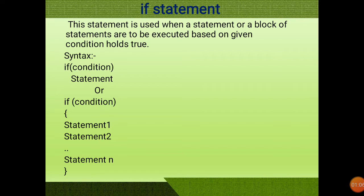The if statement is used to check a condition. If the condition is true, the given statement is executed. If the condition is false, the control ignores the given statement and moves to the next statement of the program. The syntax is: if (condition) — if this condition is true then the following statement is executed; if false then it skips the control.